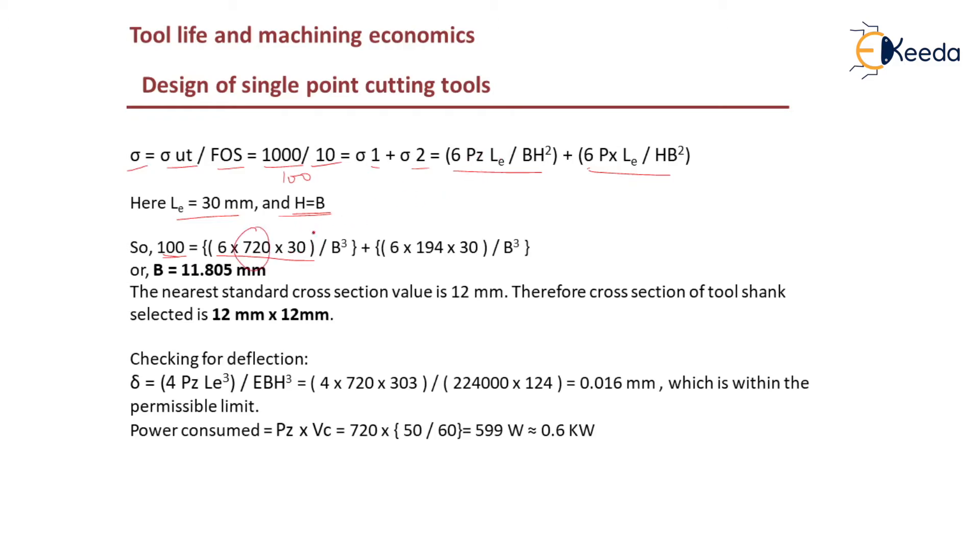That will be equal to 6 Pz, Pz we have found it is 720, Le is 30 which is given. B equals h so you can substitute as b cubed. Px is 194 which you can substitute, Le is 30, and b equals h so it is b cubed.